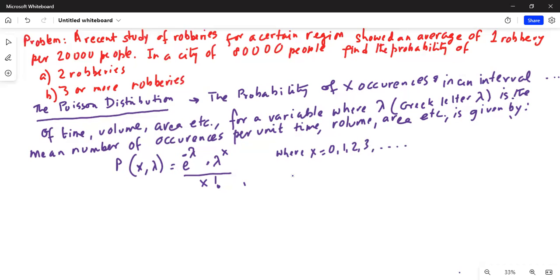Where X can be 0, 1, 2, 3, and so on. And e is the natural number, which is 2.7183. And X factorial is X times X minus 1 times X minus 2, and so on, up to 1.